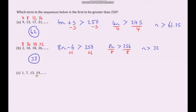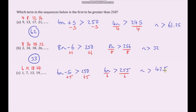For the final sequence, which term is first to be greater than 250? Working out the nth term and setting it greater than 250, we solve the inequality. Our term number has to be greater than 42.5, and the next integer greater than 42.5 is 43. So our answer is 43.